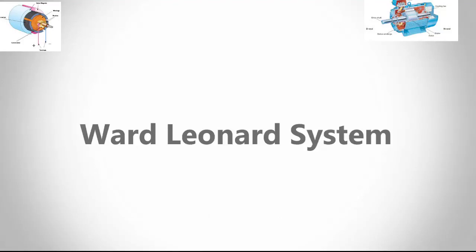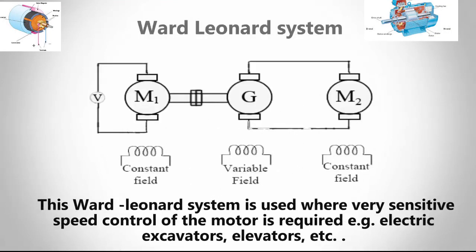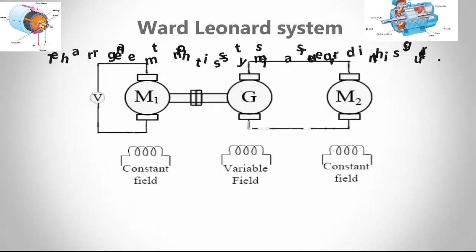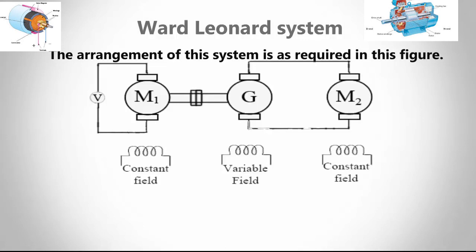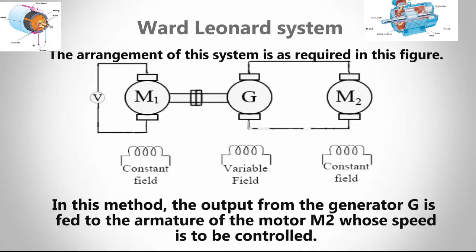The Ward Leonard system is used where very sensitive speed control of the motor is required, for example, electric excavators, elevators, etc. The arrangement of this system is as required in this figure.